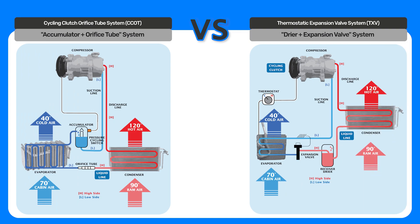An accumulator is located in the suction line going from the evaporator back to the compressor. It has a desiccant as well. What it actually does is accumulate any extra liquid refrigerant that may be in the system, giving it some extra time to evaporate so it won't damage the compressor.